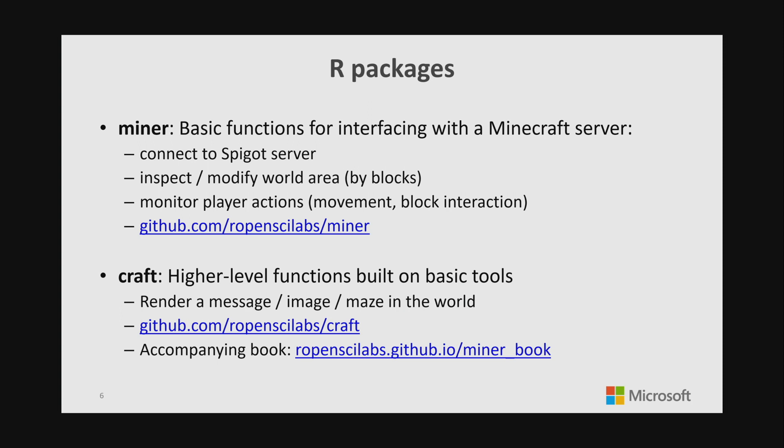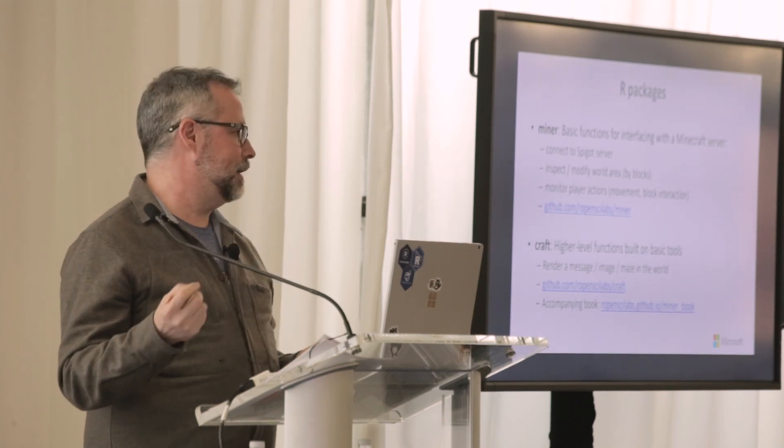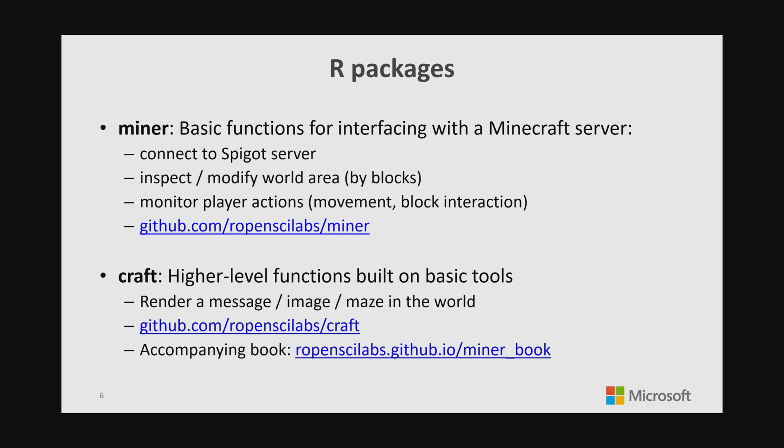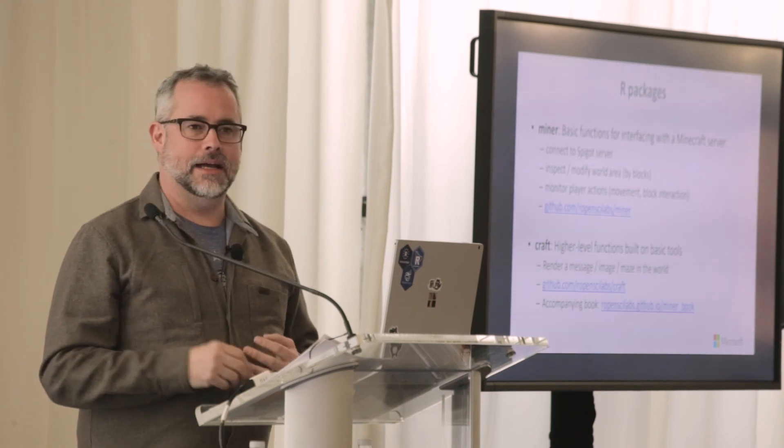We've provided two packages. The base package put together at the R OpenSci unconference is called miner, and it provides very simple building blocks to interact with the server: connect via IP address, see which blocks are in the 3D world, and monitor the player — find their location, which way they're facing, if they're hitting blocks. That package is available on GitHub. Then for higher-level projects like building a staircase, we wrote a separate package that encapsulates those simple functions. The idea is that kids would write those things themselves, but if they want to jump right in and have fun, they can access higher-level functions in the craft package, which also has an associated book written in bookdown. A particular shout-out to Carl Broman, who put together a lot of the content for that book.